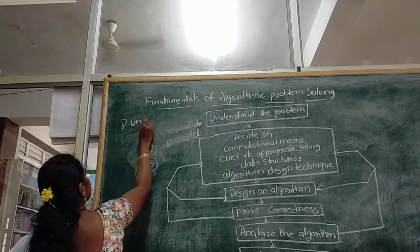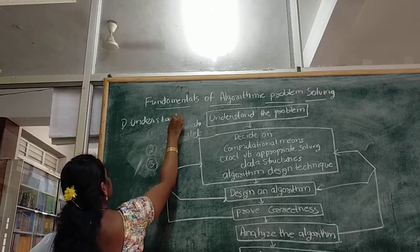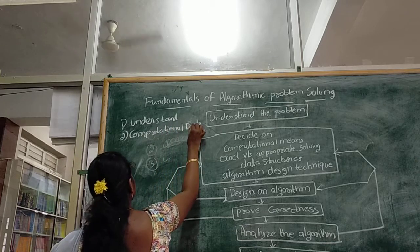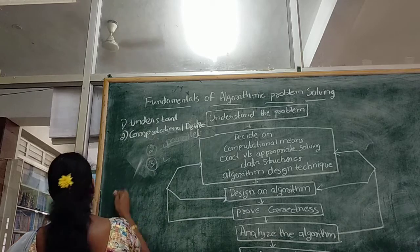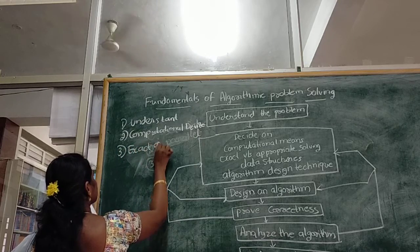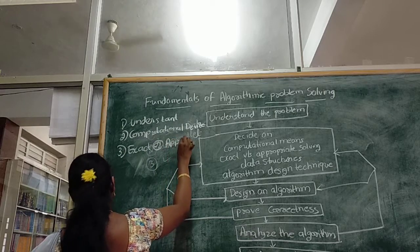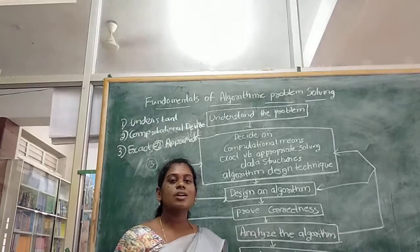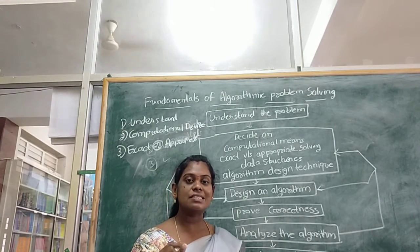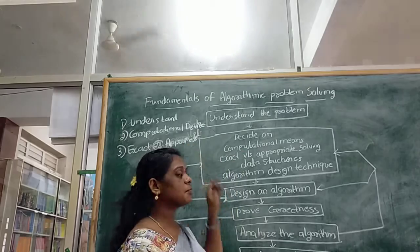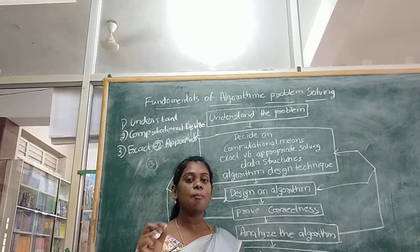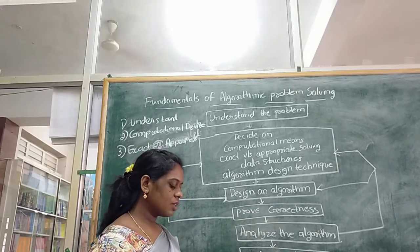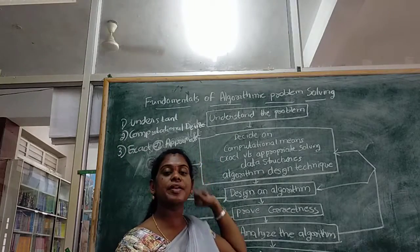The next important decision is to decide whether the problem is solved exactly or approximately. Some problems can be solved exactly, but for some complex problems you have to achieve approximate solutions. So there are exact algorithms and approximate algorithms.